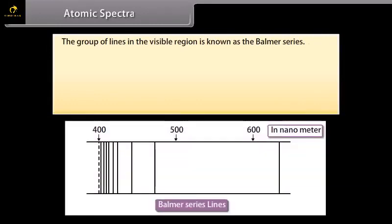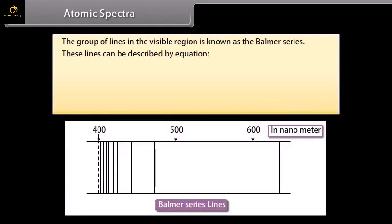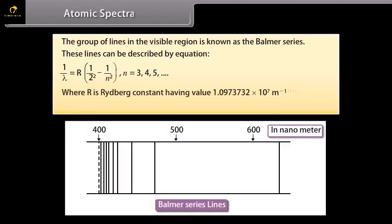The group of lines in the visible region is known as the Balmer series. These lines can be described by the equation: 1/λ = R(1/2² − 1/N²), where N may be 3, 4, 5, and so on, and R is the Rydberg constant with a value of 1.0973732 × 10⁷ per meter.